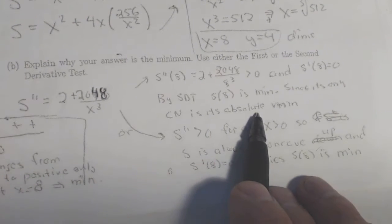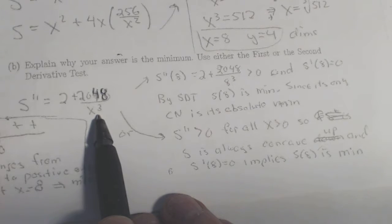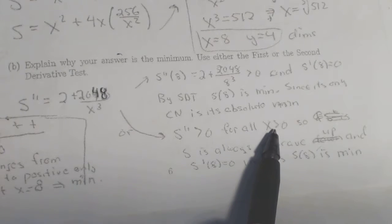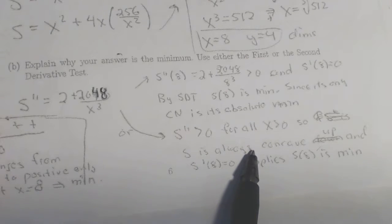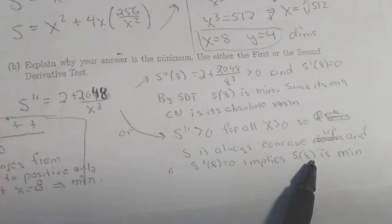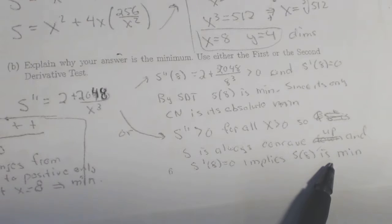Another argument that I frequently made in class is I said, look, here's the second derivative, and for all x's that make sense in this problem, all positive ones, my second derivative is always positive, always greater than 0. So for all x, the second derivative is greater than 0. For all x greater than 0, my function s is always concave up, and s prime equals 0 implies s equals 8 is a minimum. In fact, absolute minimum. So any of those for justifications.